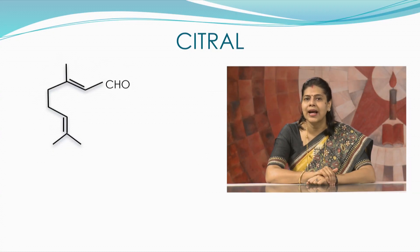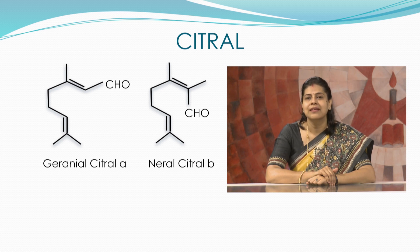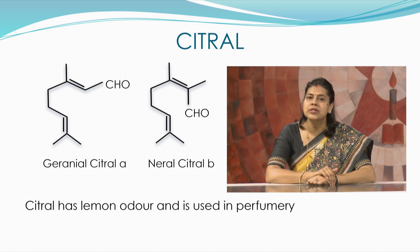Citral is another example of a terpene. It is either a pair or a mixture of terpenoids with the molecular formula C10H16O. The two compounds are double bond isomers. The E-isomer is known as geranial or citral A, and the Z-isomer is known as neral or citral B. Geranial has a strong lemon odour, whereas neral's lemon odour is less intense but sweeter. Citral is therefore an aroma compound used in perfumery for its citrus effect.